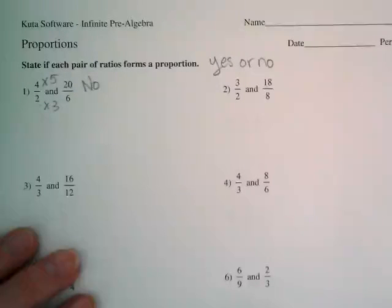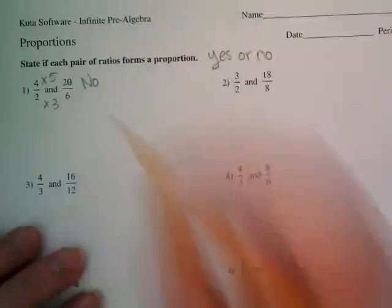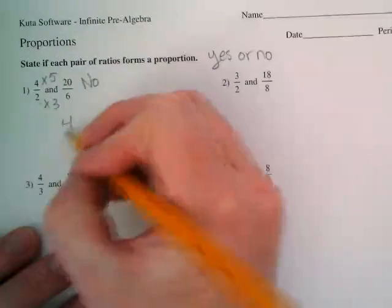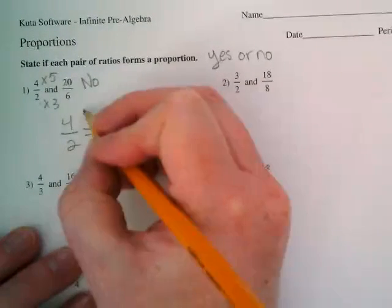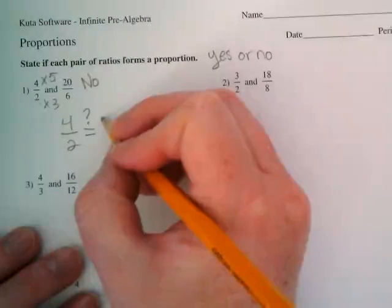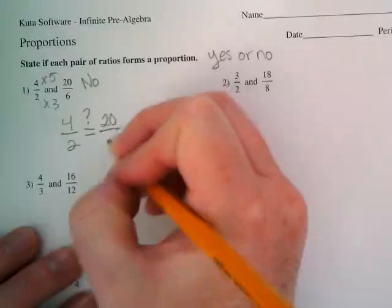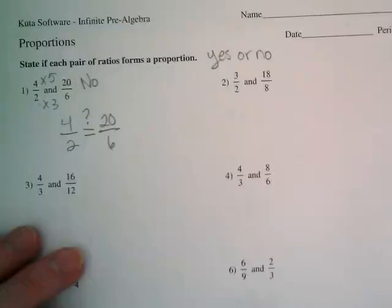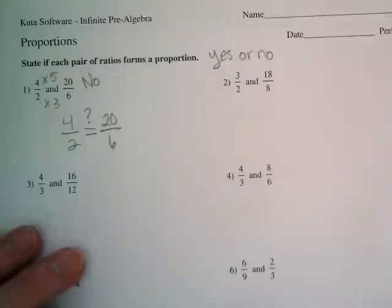The other way to check it is to cross multiply. So let's set this up down here and we're going to put an equal sign in the middle with a question mark over it because we're asking are these proportional? We already know this one isn't. We're just going to show it a second way.